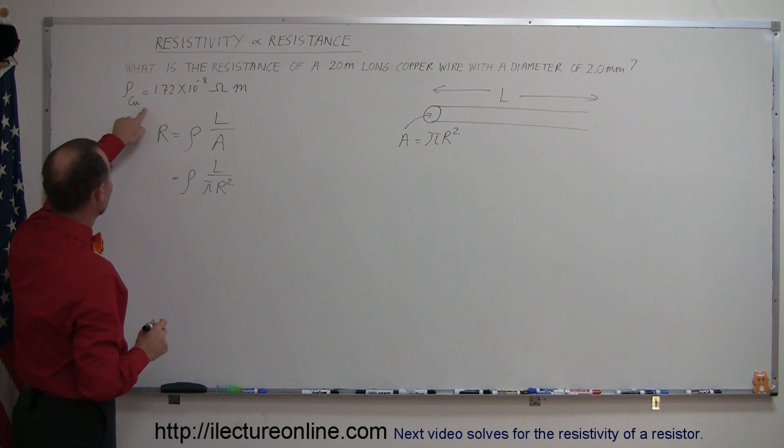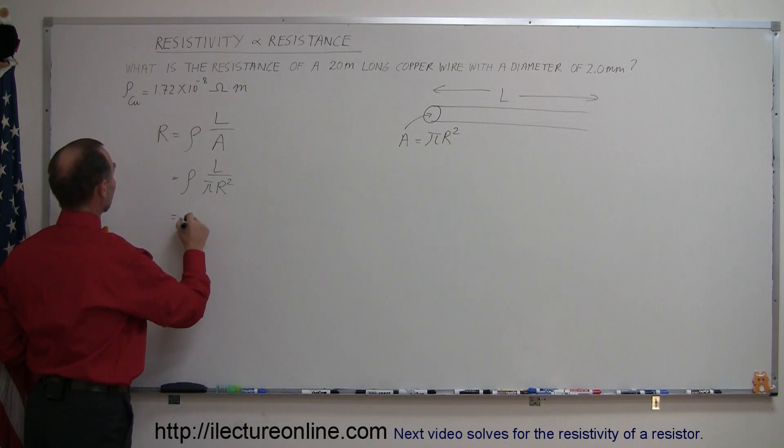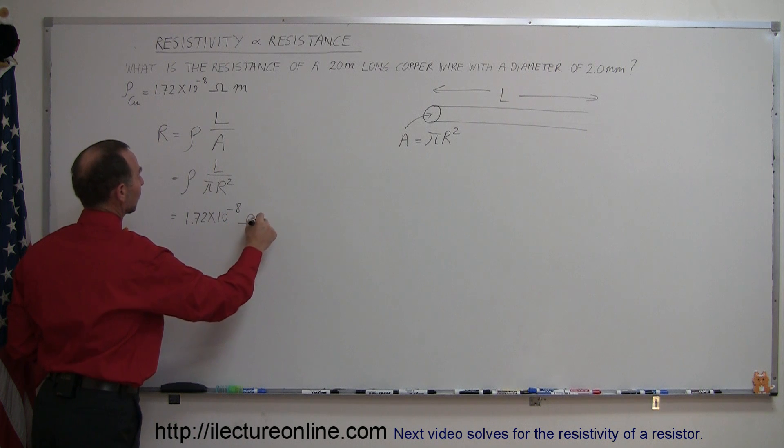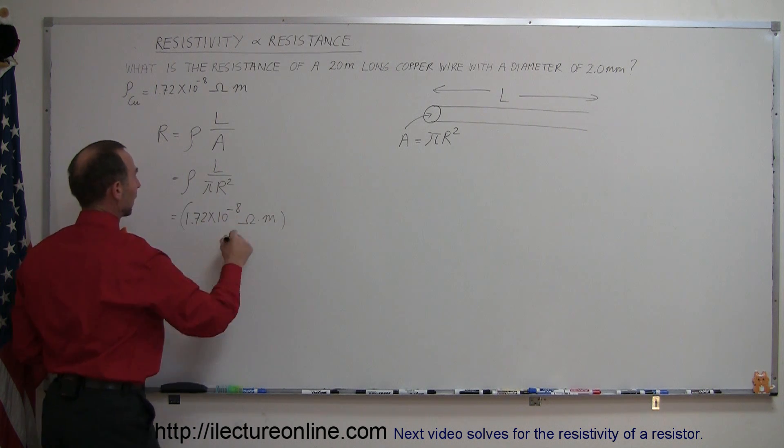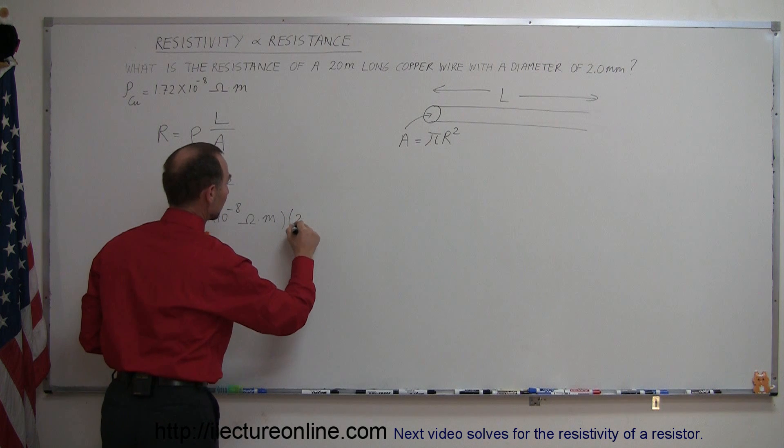Now, plug in the values. We were given the resistivity of copper, which is 1.72 × 10⁻⁸ ohm-meters. Then we multiply it times the length. The length of this wire was 20 meters.